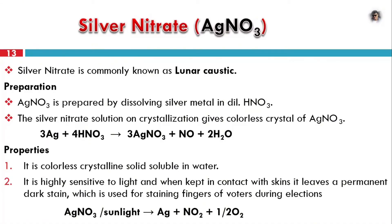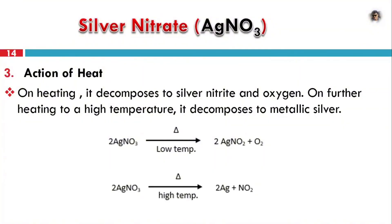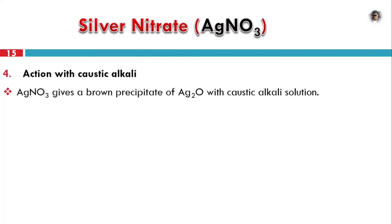Action of heat: AgNO3 decomposes on heating. At low temperature it decomposes to silver nitrite (AgNO2) plus O2. At high temperature, AgNO2 further decomposes to metallic silver. Reaction with caustic alkali: AgNO3 reacts with caustic alkali solution to give a reddish-brown precipitate of Ag2O.